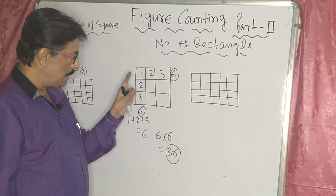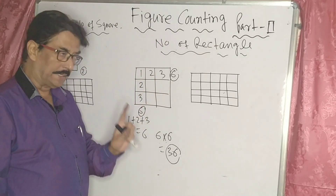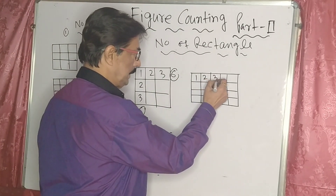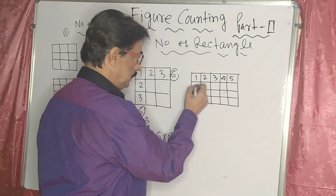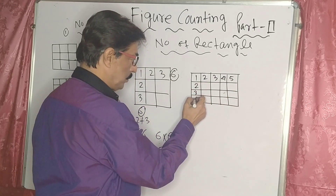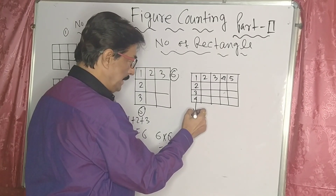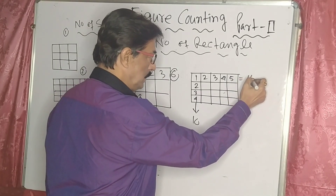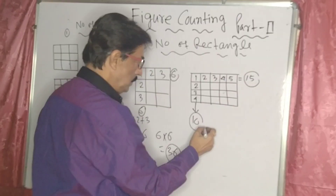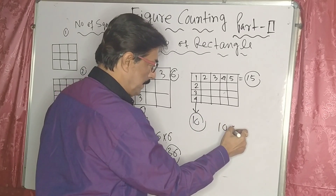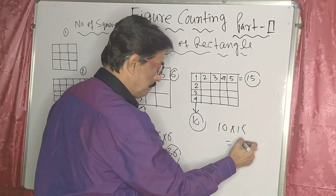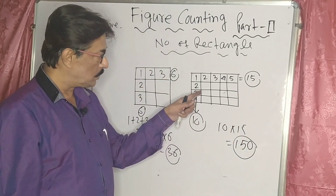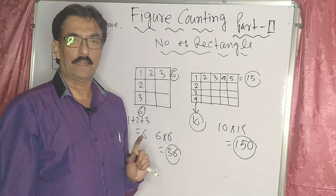For the next case, count: 1, 2, 3, 4, 5 horizontally and 1, 2, 3, 4 vertically. The horizontal addition gives 15, and the vertical addition gives 10. So the number of rectangles is 15 × 10 = 150. There are 150 rectangles inside the figure. Remember, every square is also treated as a rectangle.